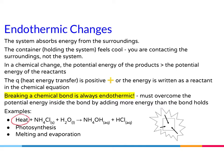As you can see in our example, in the chemical reaction of ammonium chloride and water, heat is written as a reactant, which indicates this is an endothermic reaction. It could also be written to the side of an equation as Q with a positive numerical value. Breaking a chemical bond is always endothermic — it must overcome the potential energy inside the bond by adding more energy than the bond holds in order for it to break.